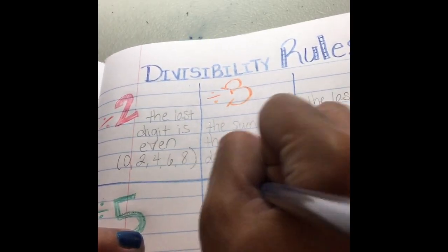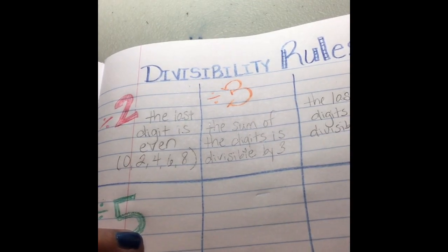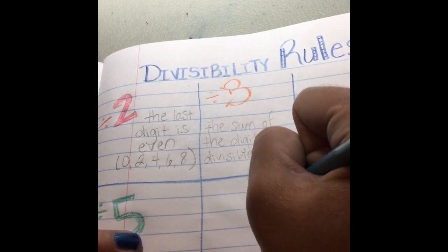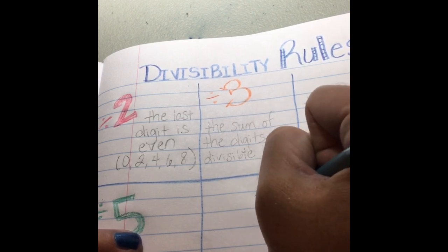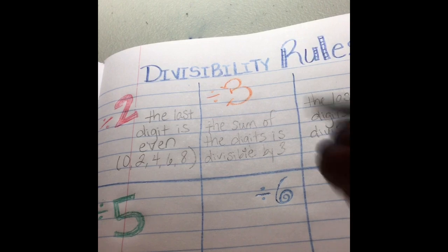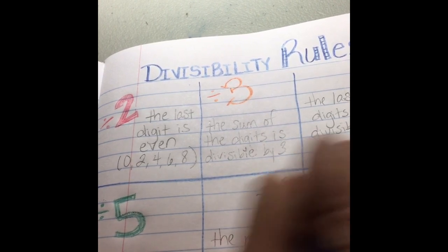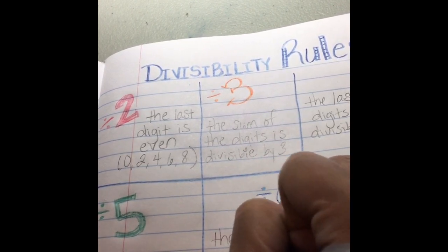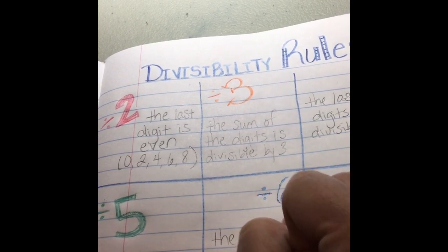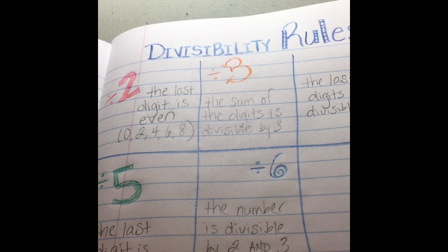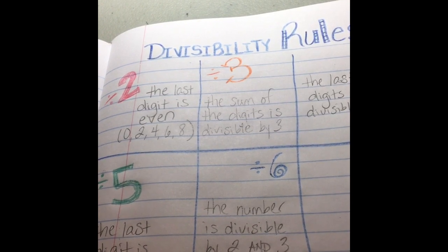Divisible by six. Let's get a little bit of blue going here. A number is divisible by six if the number is divisible by two and by three. So the number 12. 12 is an even number, so it's divisible by two. 12, the sum of the digits is one plus two is three, so it's divisible by three. So 12 is divisible by six.